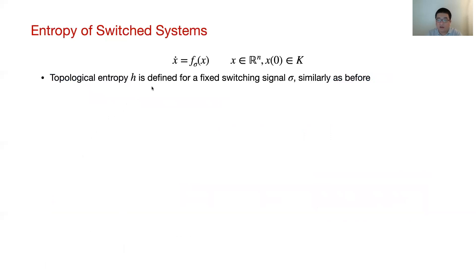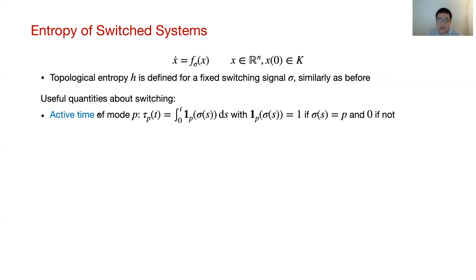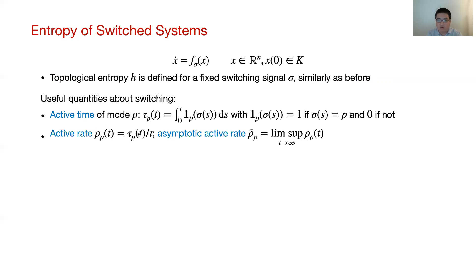For switched systems, we consider the topological entropy defined for a fixed switching signal, constructed similarly as before except that the solution follows a different mode after each switch. Here are some useful quantities about switching. The active time of mode p is the total time mode p is active over the interval from 0 to T. The active rate is the percentage of time mode p is active, and its limit supremum is the asymptotic active rate. The sum of active rates over all modes always equals 1, while the sum of asymptotic active rates can be larger than 1.